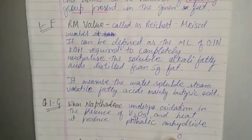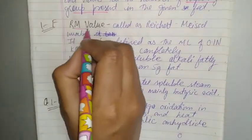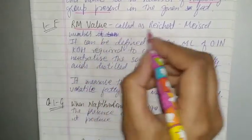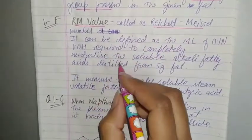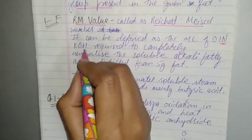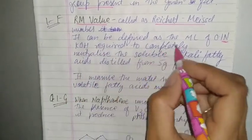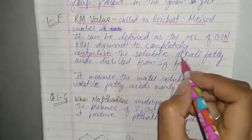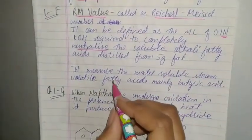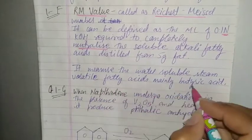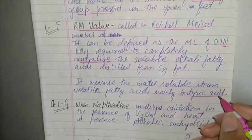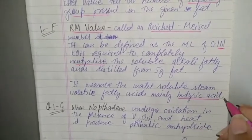What is RM value? RM value is also called as Reichert-Meissl number. It is defined as the ml of 0.1 N KOH (potassium hydroxide) required to completely neutralize the soluble volatile fatty acid distilled from 5 gram of fat. It measures the water soluble steam volatile fatty acid, mainly butyric acid. Basically for butter, if we check that it is pure for our usage and consumption, we check the RM value.